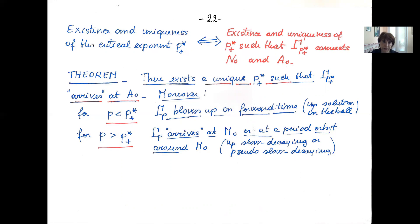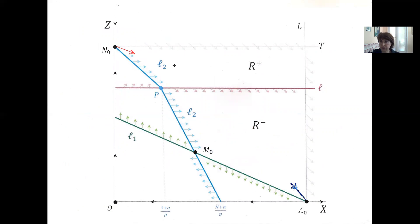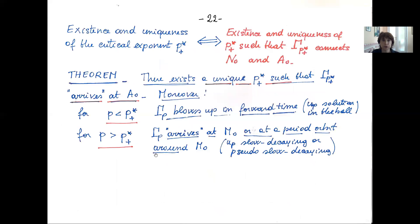The existence and uniqueness of the critical exponent P^*_+ means the existence of a unique critical exponent for the dynamical system such that there exists an orbit connecting N_0 with A_0. So the critical exponent is defined as the unique exponent for which there is an orbit that starts from N_0 — meaning it is regular at the origin — and arrives at A_0 — meaning it is fast decaying.